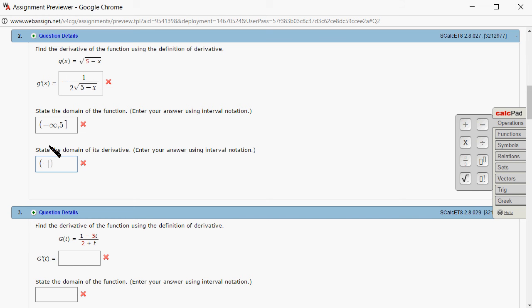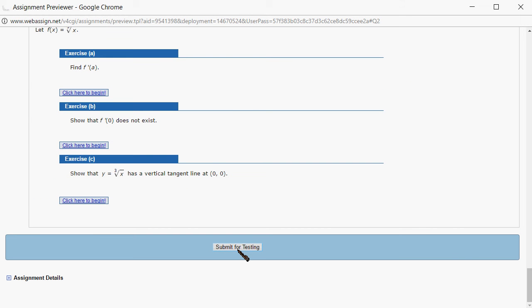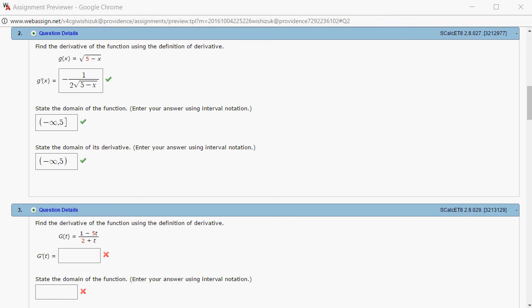So it's negative infinity to 5, but this one uses a parenthesis. Let's check the answer. Submit for testing. It came back, and it looks like we got all these guys correctly. That's it. I hope that this was clear.